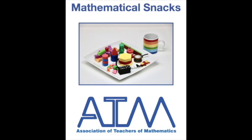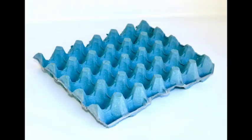This is a mathematical snack from the Association of Teachers of Mathematics. Here is an egg box. This egg box can have 24 eggs fitted into it. This task is about fitting eggs into the egg box in a particular way. And that way is that every row and every column has to have an even number of eggs.